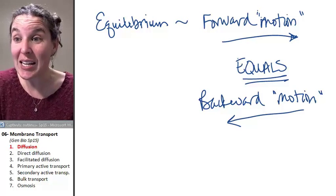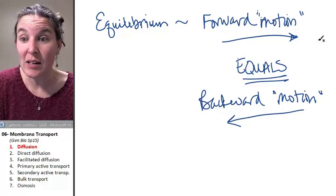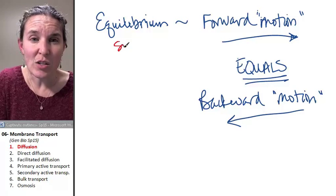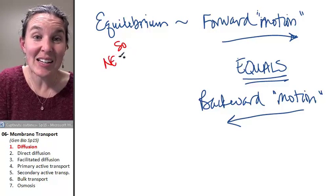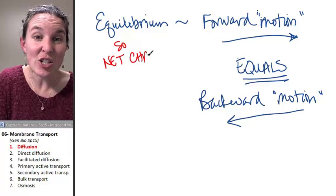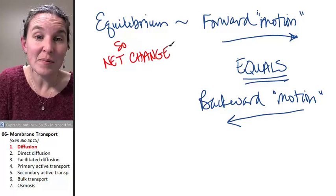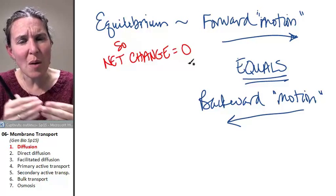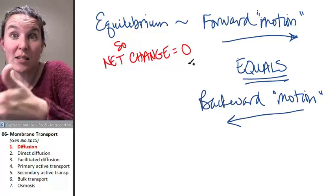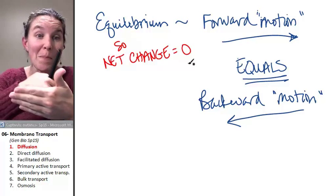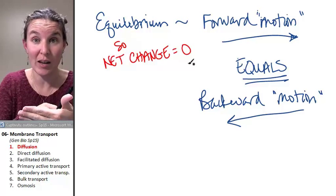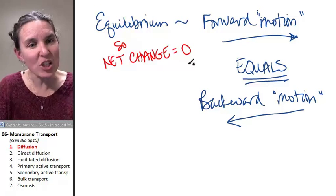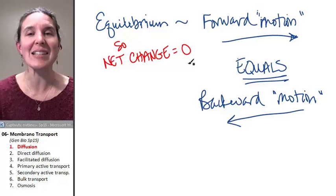So the net change, right? So the net change equals zero. The molecules are equal on both sides. They're moving forward across the membrane at the same rate that they're moving back across the membrane. And so the net change is zero. That's equilibrium.